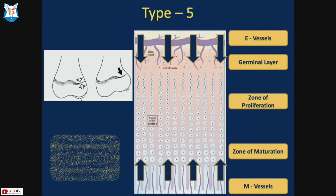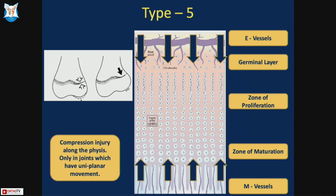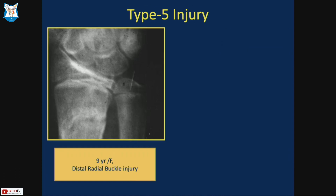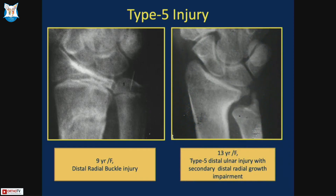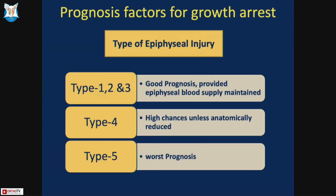Type 5 injuries are compression-type injuries occurring in joints with monoplanar movement, with compression at the zone of maturation. A case example is a nine-year-old girl with a distal radial buckle injury. On follow-up, premature physeal arrest of the distal ulna was found, leading to positive radial variance — illustrating a Type 5 injury.